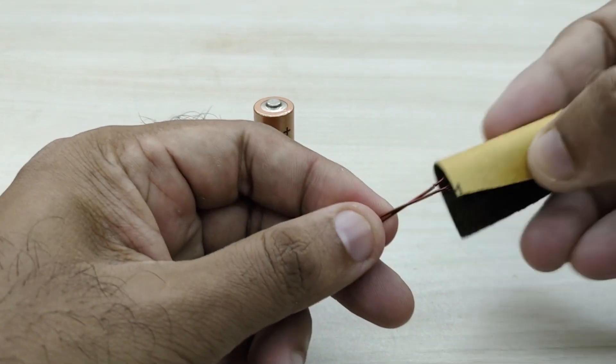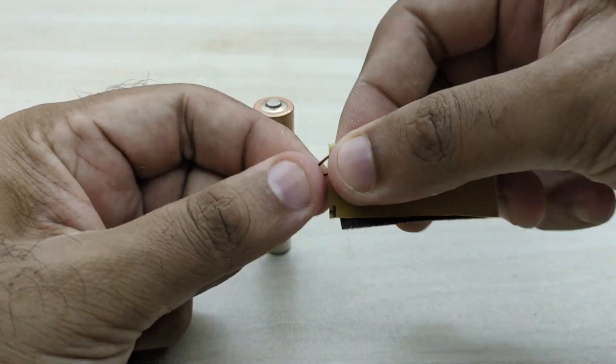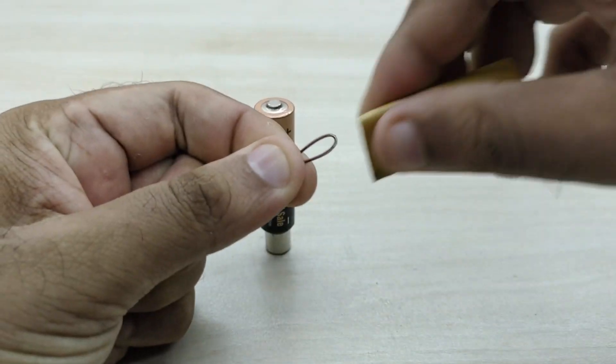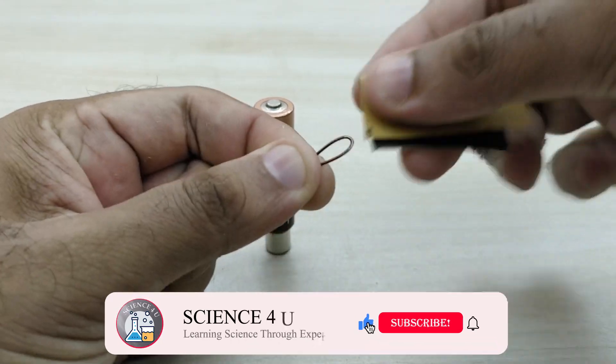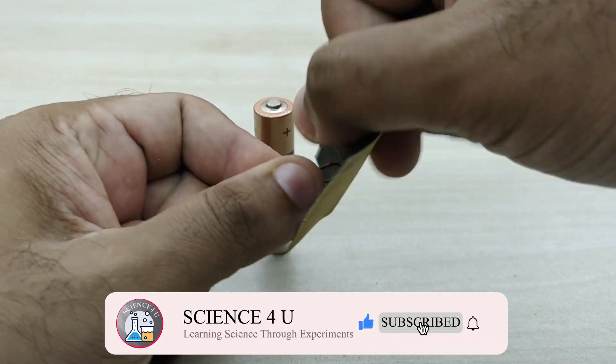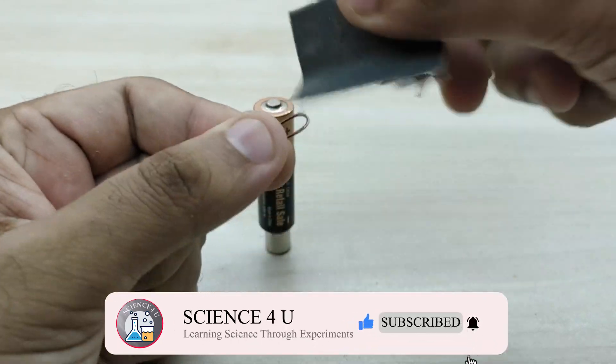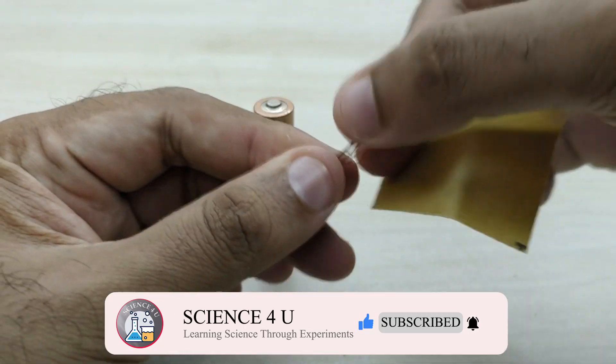Now take an emery paper and remove insulation from the middle bent portion of the wire as shown.